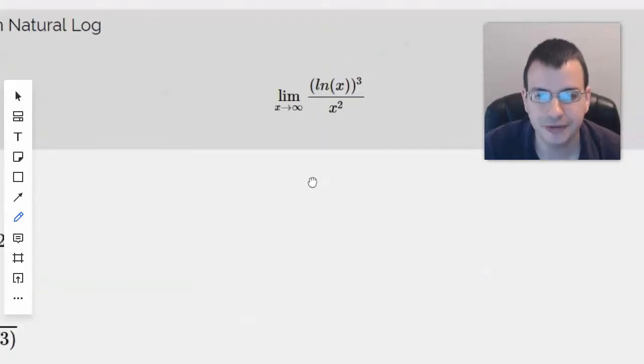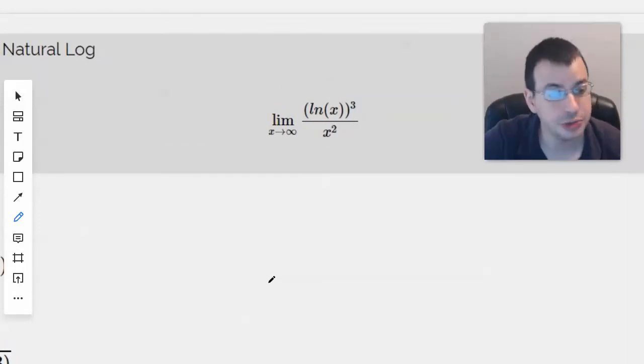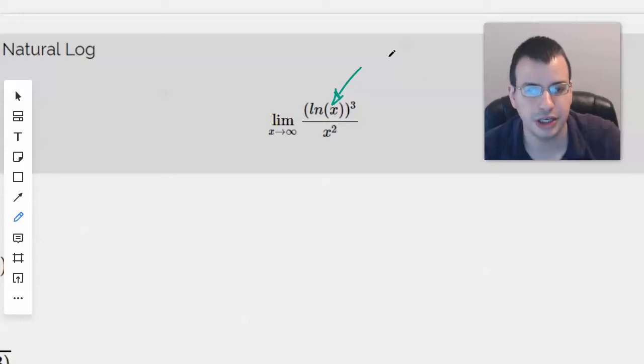Evaluate limit as x approaches infinity of natural log of x quantity cubed divided by x squared. This is going to be L'Hopital's rule because when you plug in infinity, you're going to get natural log of infinity, which is infinity, over x squared, which is infinity.